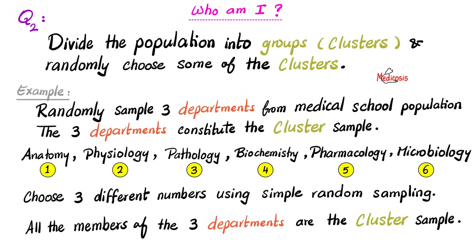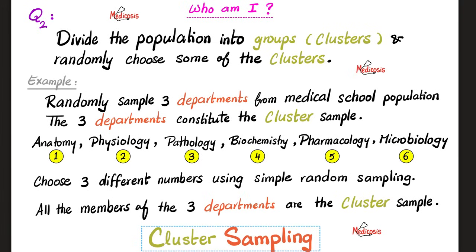Next question: we divide the population into groups called clusters and randomly choose some of those clusters. For example, randomly sample three departments from a medical school population — anatomy, physiology, pathology, biochemistry, pharmacology, and microbiology — numbering them one through six. We don't use all of them; we just need three. We choose three numbers via simple random sampling, and all members of those three departments constitute the cluster sample. Since we divided them into clusters, this is called cluster sampling.